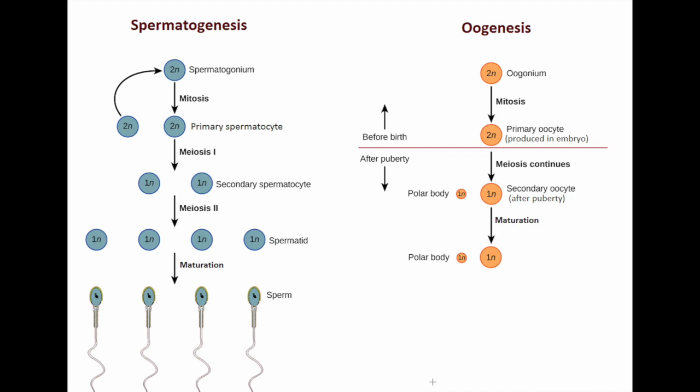The sperm and egg come together through fertilization, and all further processes go on from there. This is the basic idea of gametogenesis, covering spermatogenesis and oogenesis. If you want to learn more or want things explained more clearly, please let us know and we can make it as easy as possible. Thank you.